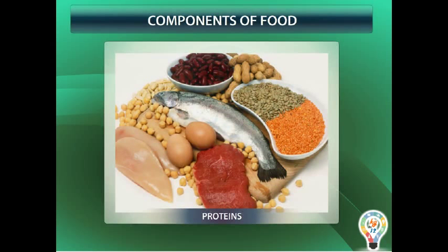Proteins. Proteins are needed for the growth and repair of our body. Foods containing proteins are often called body building food. Some sources of proteins are pulses, fish, meat, and eggs.